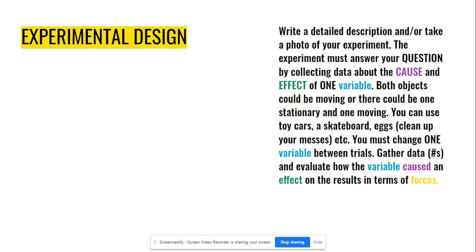Once again, the word variable shows up in blue here a bunch because it's that one variable that you're testing. Make sure that your experiment has just only one thing changed between trials.